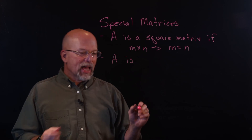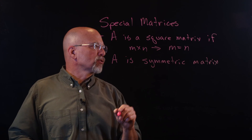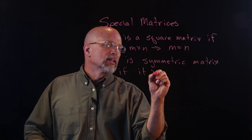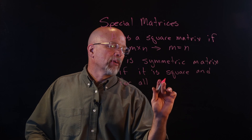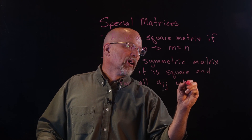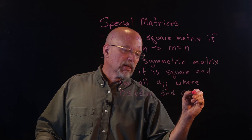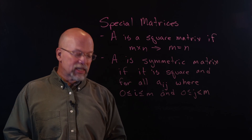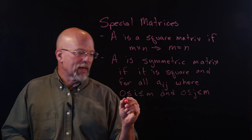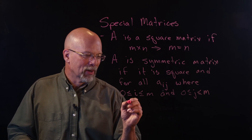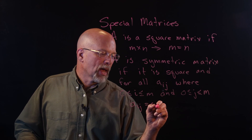We also have this idea of a symmetric matrix. A is a symmetric matrix if it is square, and for all A sub i,j — where 0 ≤ i ≤ m and 0 < j ≤ m, where m is the dimension — A sub i,j is equal to A sub j,i.